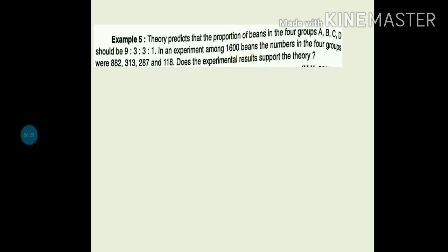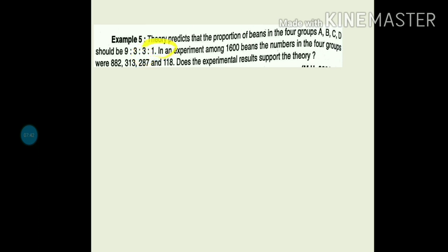Among 1600 beans we will find expected frequency. Observed frequencies are given in the question. Expected frequency is capital N into P, where N is total beans = 1600. For probability: find the total of the ratio — 9 plus 3 plus 3 plus 1 equals 16. So out of 16, group A has 9, group B has 3, group C has 3, group D has 1. Probability for group A is 9 by 16, for group B is 3 by 16, for group C is 3 by 16, and for group D is 1 by 16.